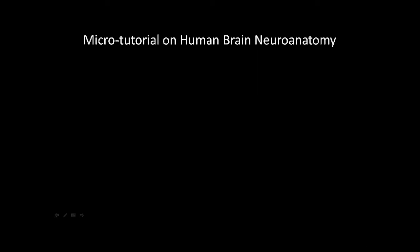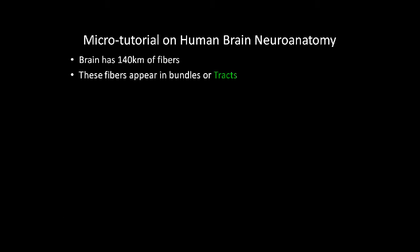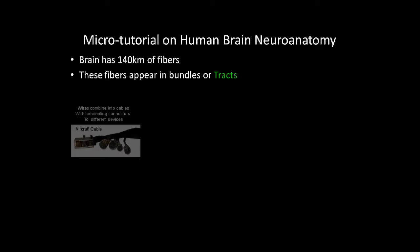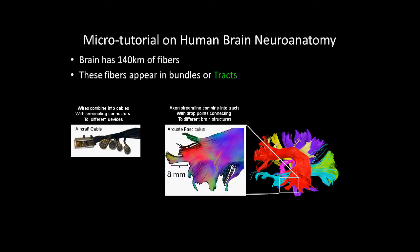Now let's provide a brief tutorial. The brain has 140 kilometers of fibers in your head. These fibers appear in bundles or tracks. To put this in perspective, it's like an aircraft cable where you would have a large bundle of fibers and individual drop points for the individual instruments. What we'll be looking at is individual tracts.